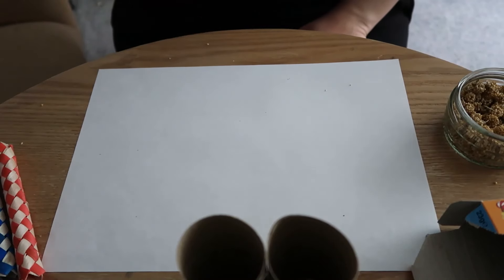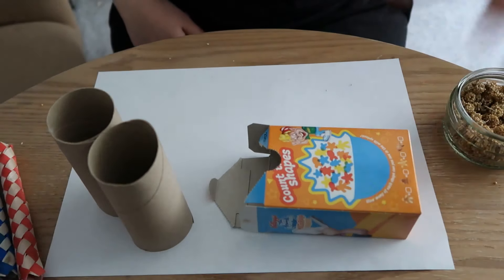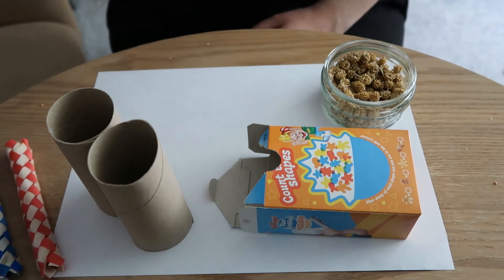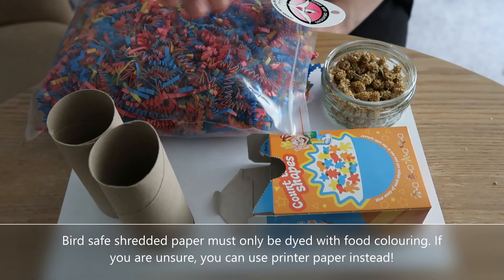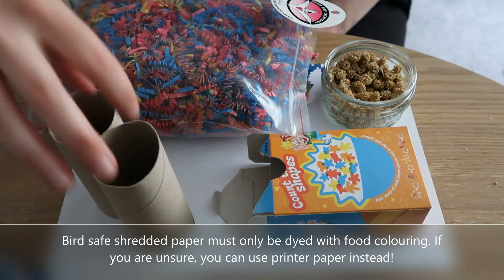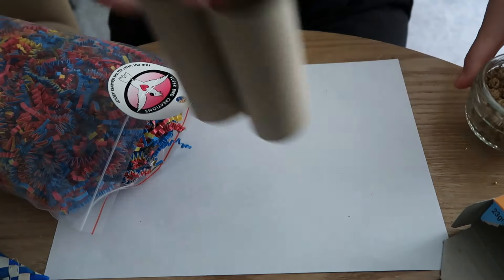So for the next bird toy, you're going to need some toilet rolls, some small cardboard boxes, your bird's favorite treat. You're also going to need some shredded bird safe paper and then any other bird toys that you might have around the house that you can put to good use. So let's get started.